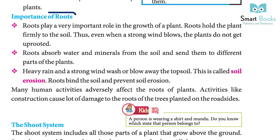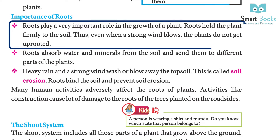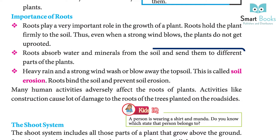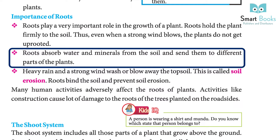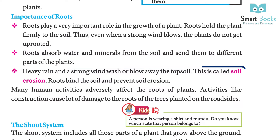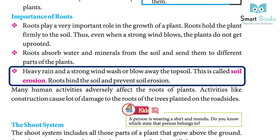Importance of roots: roots play a very important role in the growth of a plant. Roots hold the plant firmly to the soil, so even when a strong wind blows, the plants do not get uprooted. Roots absorb water and minerals from the soil and send them to different parts of the plant.